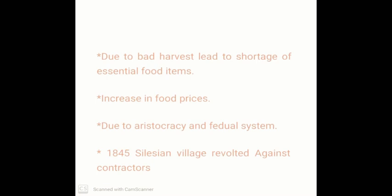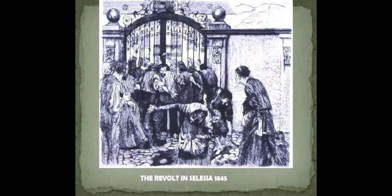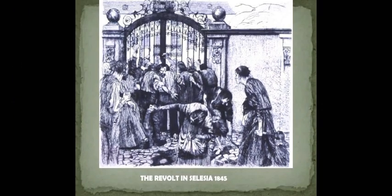If you hear the story of the Silesian village, you will really be moved. How badly they were being exploited by the contractor! The journalist Wilhelm described the events in a Silesian village as follows: in these villages, cotton weaving was the most widespread occupation. The contractors were taking advantage and paying less wages to them. So, on 4th June at 2 p.m., a large crowd of weavers emerged from their homes and marched up to the mansions of the contractor, demanding higher wages. And you can see in this figure how all weavers assembled outside the contractor's house, demanding higher wages.